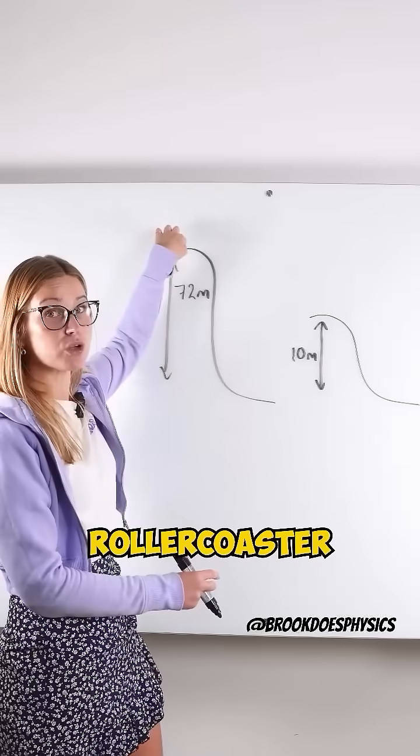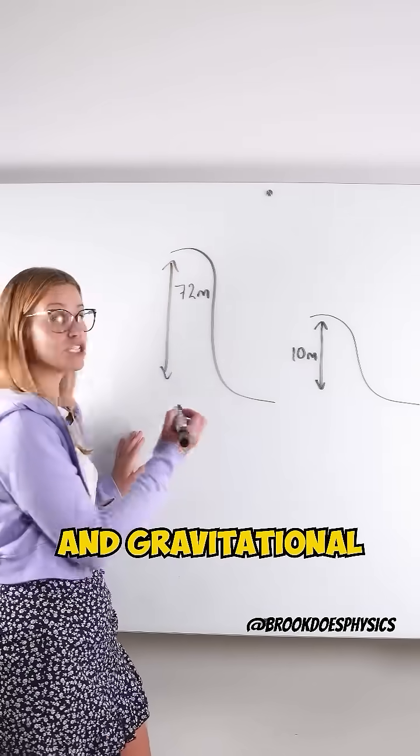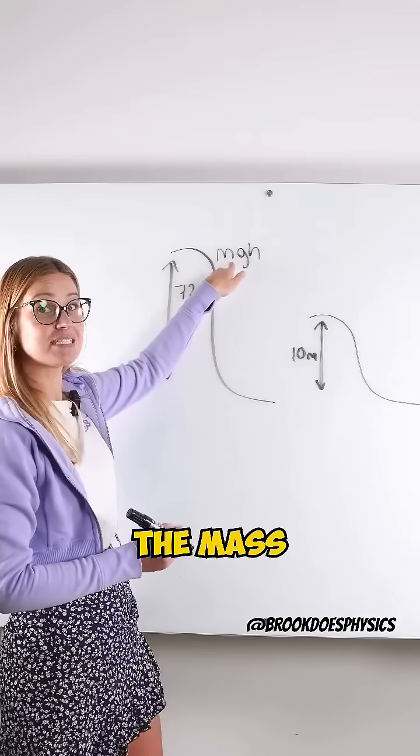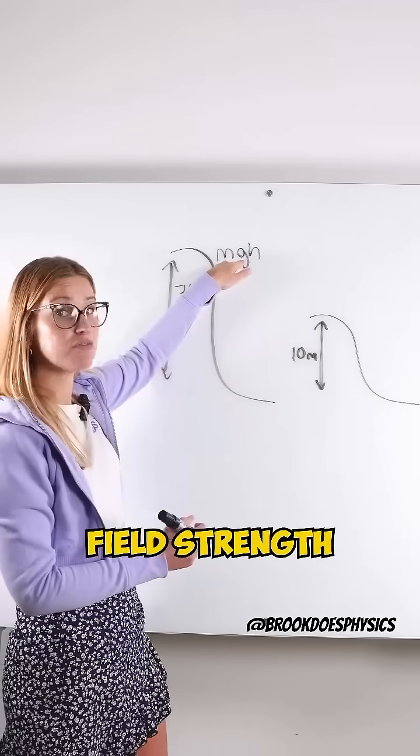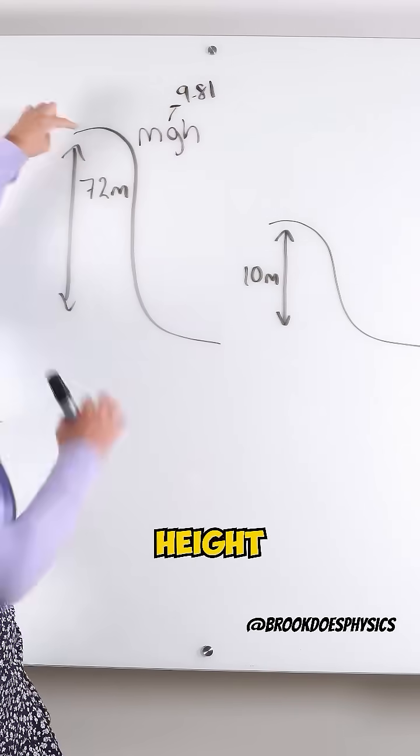At the top of the roller coaster, the energy you have is gravitational potential energy. Gravitational potential energy is MGH - the mass times the gravitational field strength, which on Earth is always 9.81, times by the height of the roller coaster.